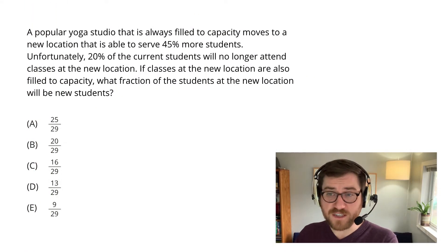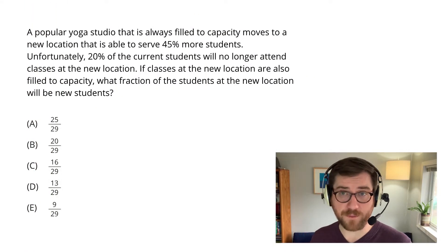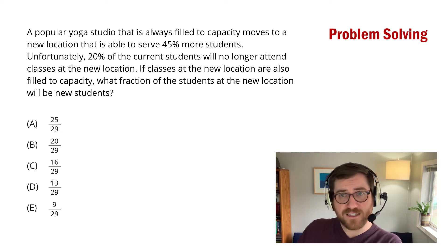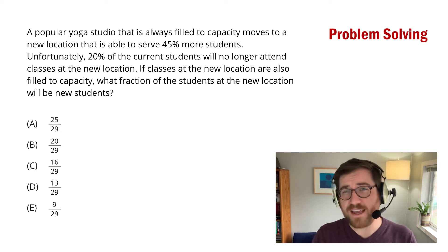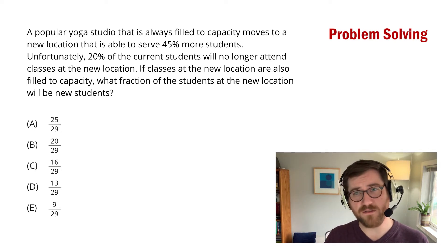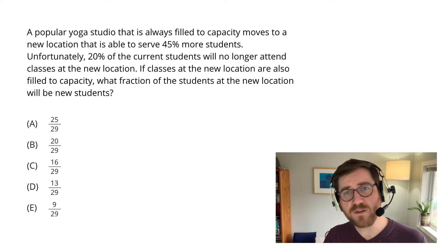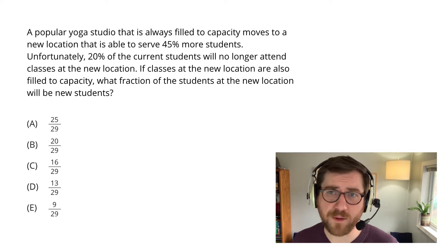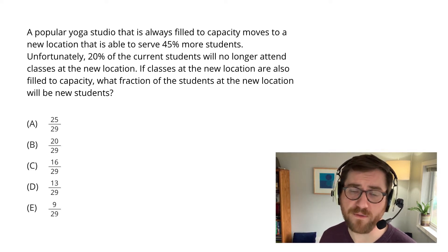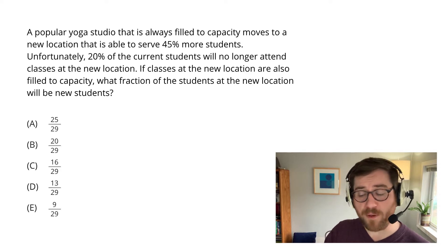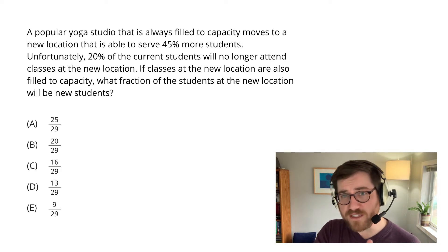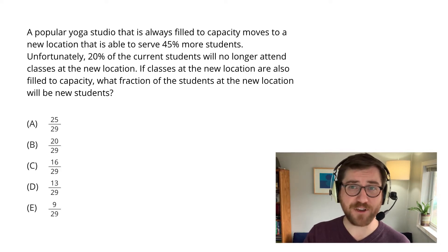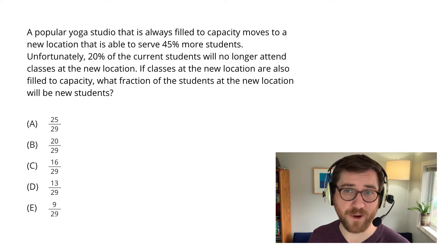What I noticed right away is that this is a problem solving problem. So I want my eyes to go not to the text of the problem, but to the answer choices. Give those some consideration for a few seconds. What do they tell you about the kind of problem you're about to solve? Then you can start reading the problem. But one last thing — keep that pen down until you actually have a good sense of what you want to write.